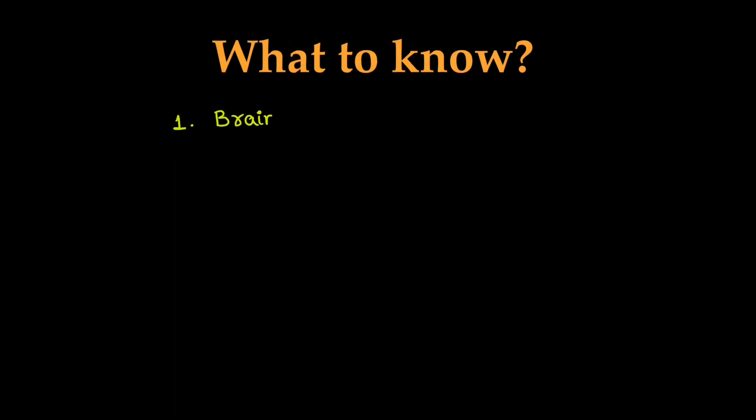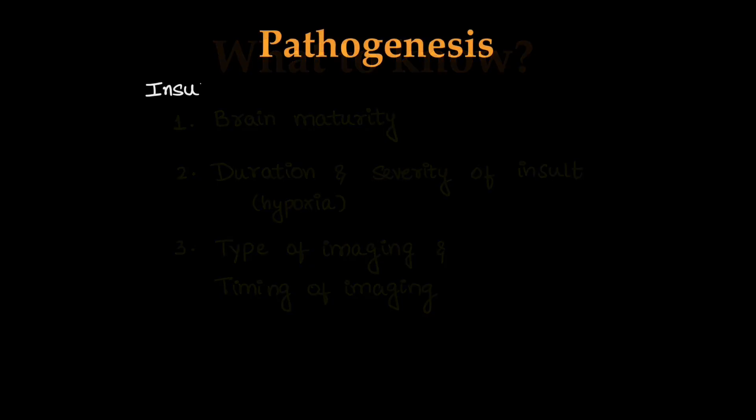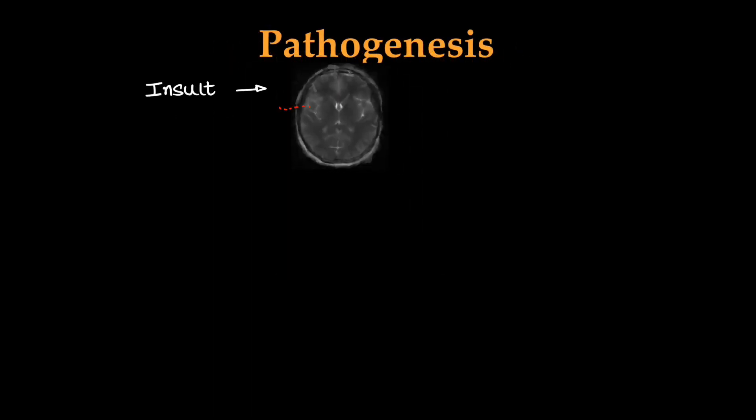What should we know before imaging? We should know the brain maturity, whether it is preterm or term. We should know the duration and severity of insult, because imaging findings change along with that, and we should decide on the type of imaging and when to do the imaging.